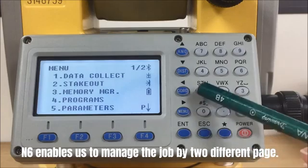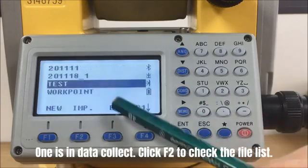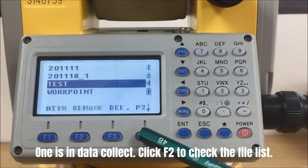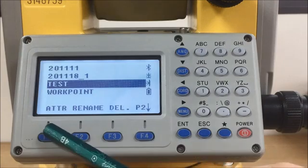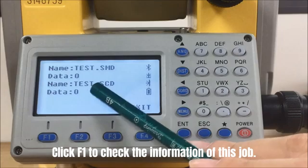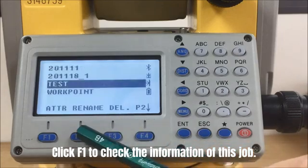N6 enables us to manage jobs by two different pages. One is in Data Collect. Click F2 to check the file list. The first one is Attribute. Click F1 to check the information of this job.